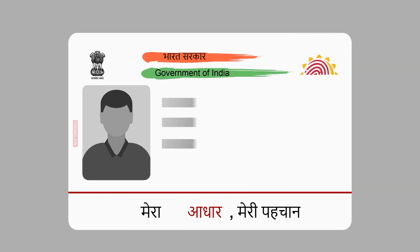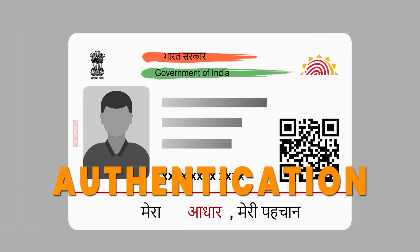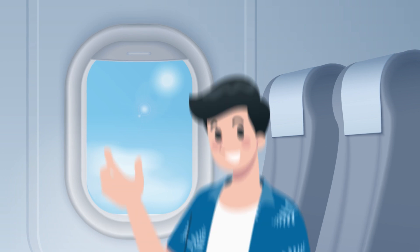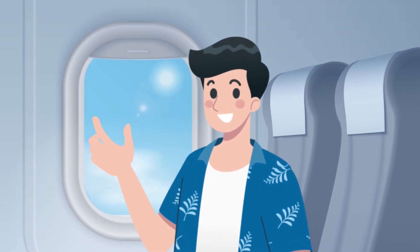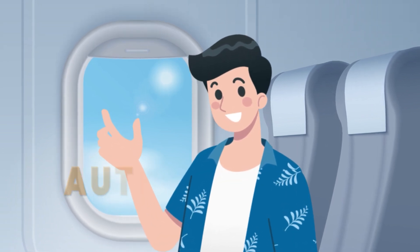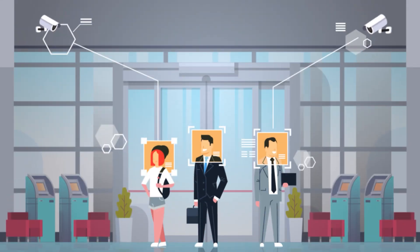To summarize: Mukul's name in the list is identification; he showed his Aadhaar card and passport to prove he is Mukul — that is authentication; he got seat number 37 and used it — that is authorization. The fourth concept is accounting: the cameras in the airport ensure he takes the right flight at the right time. That is called accounting.